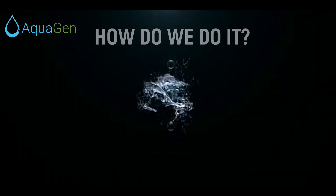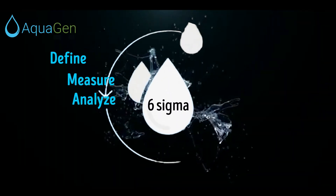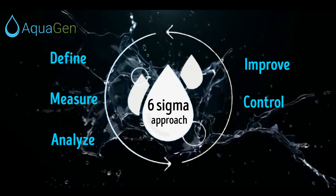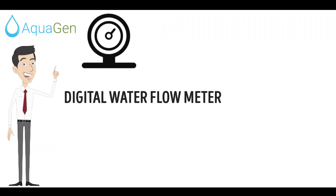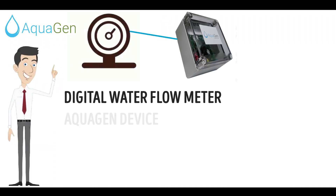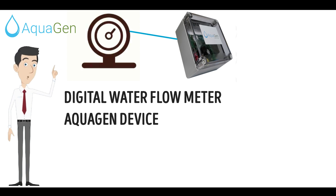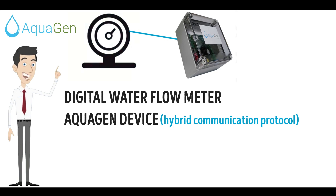How do we manage to do it? We use the Six Sigma approach. The digital water flow meter at your facility is connected to the Aquagen device, which is compatible and talks to any type of flow meter. The device is reliable with variant communication protocol.